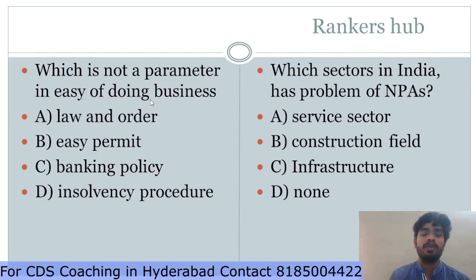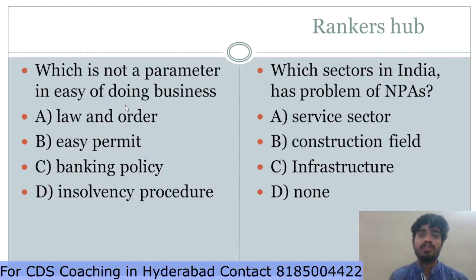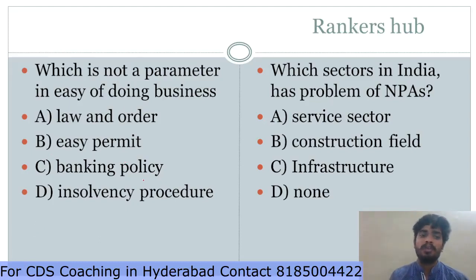Which is not a parameter in Ease of Doing Business? The Ease of Doing Business report is released by the World Bank. India has implemented laws so that business conducting became very easy. Parameters include permit procedures, banking policy, and insolvency procedures. The answer is option A — law and order is not a parameter in Ease of Doing Business.